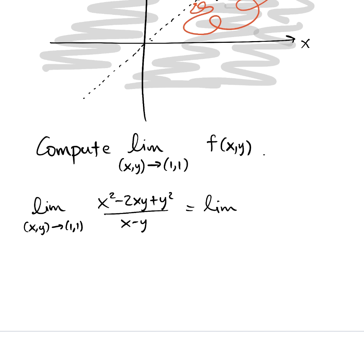Let's factor the numerator. So this is the limit as x, y approaches 1, 1. And the numerator is really x minus y times x minus y. If you foil that out, you get the original numerator. And this is still all over x minus y.